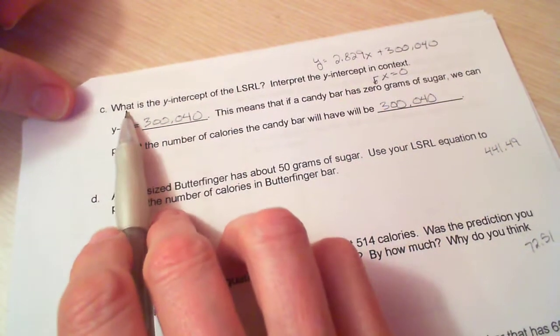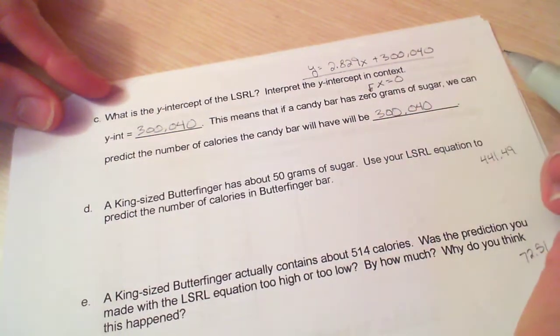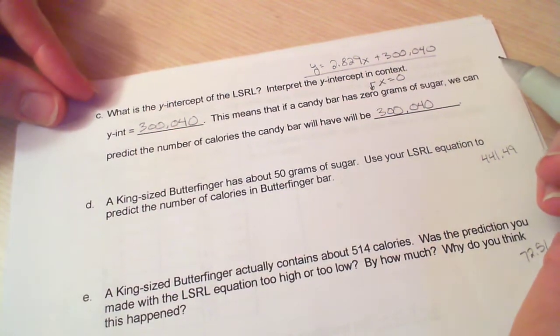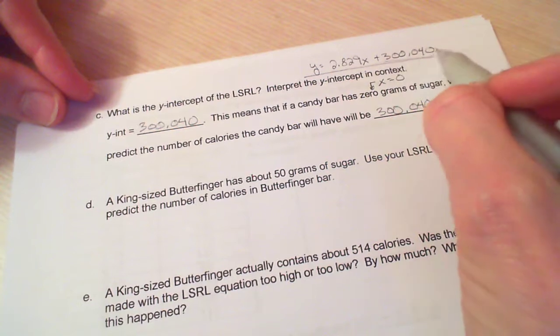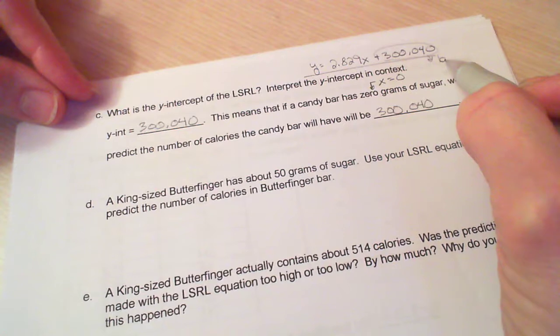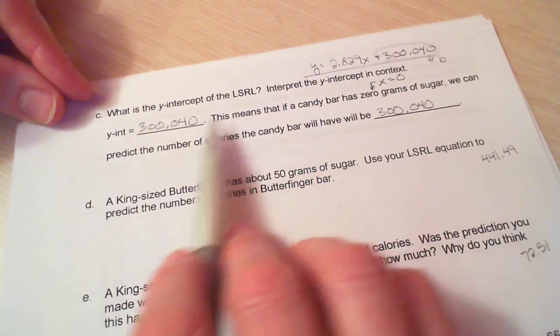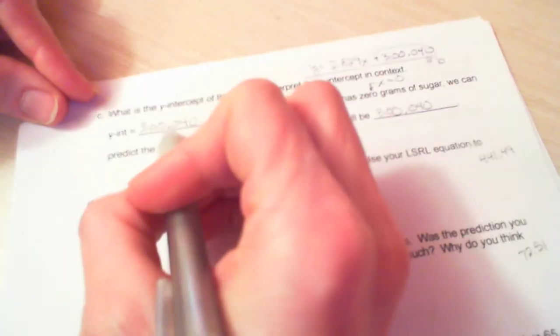Alright, now let's finish looking at this example. So I'm going to flip the page here. Part c says what is the y-intercept of your least squares regression line? So I copied this line up here so I would have this information. Remember, this is my y-intercept, that's my b. Y-intercept is where my line crosses or intersects the y-axis. So x is always zero at that point. So this is my y-intercept: 300.040.